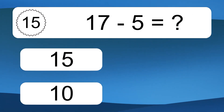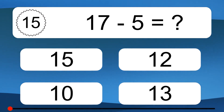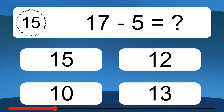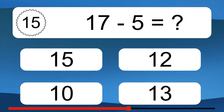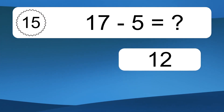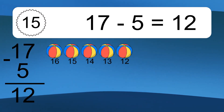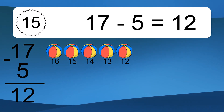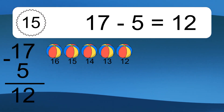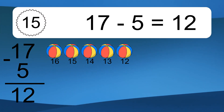17 minus 5 equals what? 17 minus 5 equals 12. Let's count it: 16, 15, 14, 13, 12.